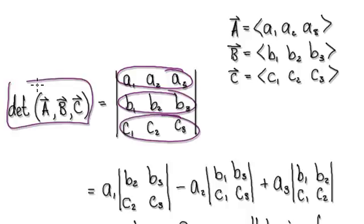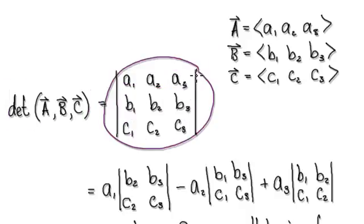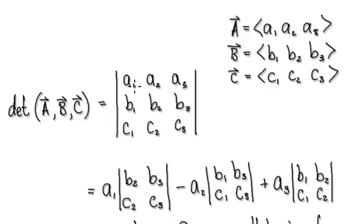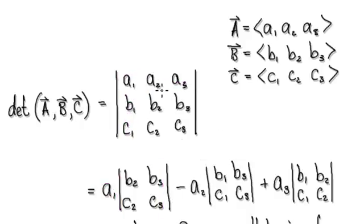To work out the determinant — remember, the result could be positive or negative — the first element would be this one here. Discard everything straight across and discard everything straight down, then just look at this sub-matrix and work out its determinant. The second element would be this one here: discard straight across, then discard straight down.